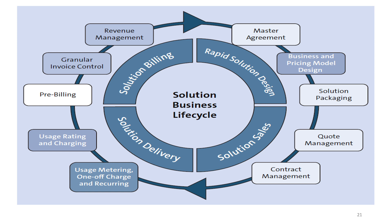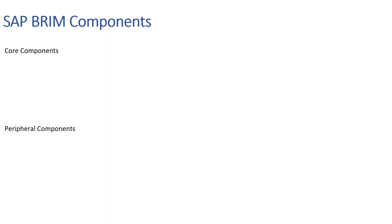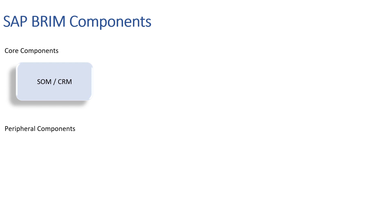Now let's see what the components of BRIM are and how each component complements one another. BRIM is made up of four major components. The first is SOM, full form: Subscription Order Management.